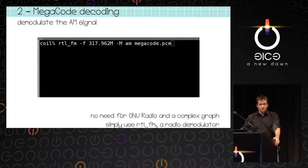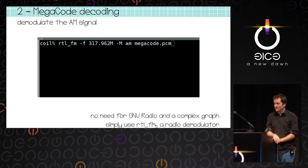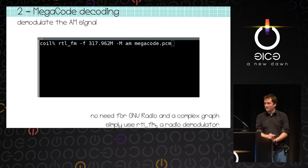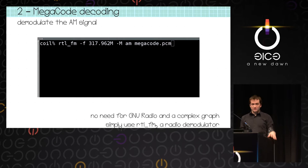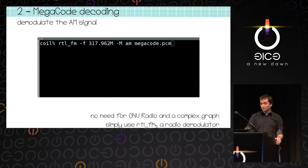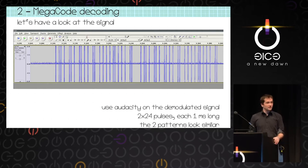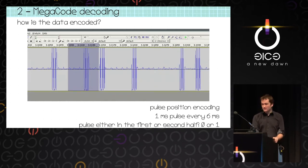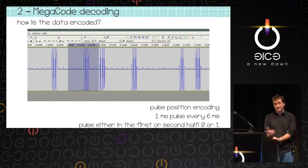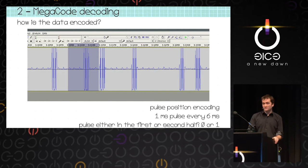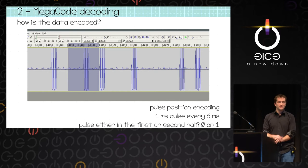Software-defined radio can be complicated, and GNU Radio is complicated — I'm not a fan of it. We want to keep things very easy. We know it's AM modulation, so I just use a tool called RTL-FM which can do AM demodulation. It's designed for listening to audio using software-defined radio. You tune to the frequency, set AM modulation, put it in a file, then open the file using any audio editing tool. We can see again 2 times 24 pulses. Pulses are 1 ms long, grouped in bit frames of 6 ms. Since it's pulse position, the burst in the first half is a zero; in the second half, it's a one. This isn't written in the documentation, but you figure it out pretty easily.